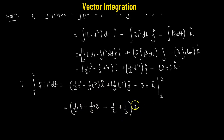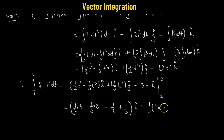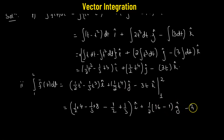For the j-cap component, we have (1/2) t to the power of 4, so that's (1/2)(2 to the power of 4), which is 16, minus (1/2)(1 to the power of 4), which is simply 1, multiplied by j-cap. For the k-cap component, negative 3 times t gives 3 times (2 minus 1), multiplied by k-cap.